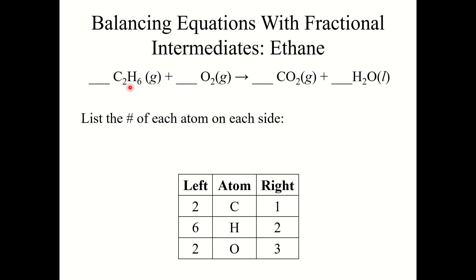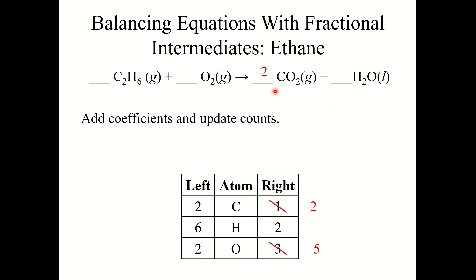We've got a combustion reaction of ethane — C2H6 — with oxygen, producing carbon dioxide and water. I'm going to start with carbon. I'm going to place a two in front of CO2 to balance out carbon. Now I've got two carbon atoms on both sides, and I have five oxygen atoms on the right side.